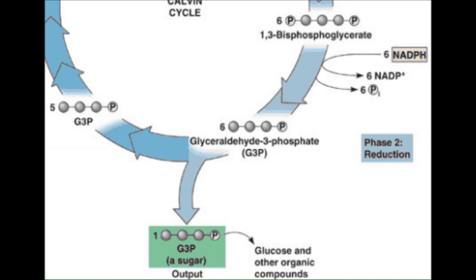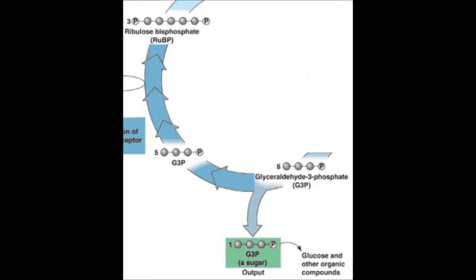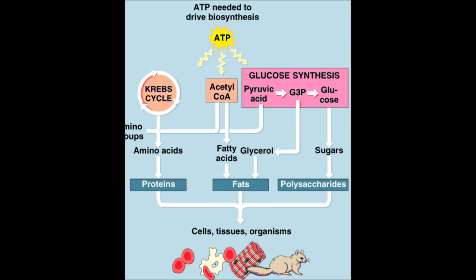The ADP and NADP plus go back to the light reaction. The fate is one G3P leaves and the other 5 convert back to RuBP with the help of ATP. G3P is used in the synthesis of fats, proteins, and carbohydrates.